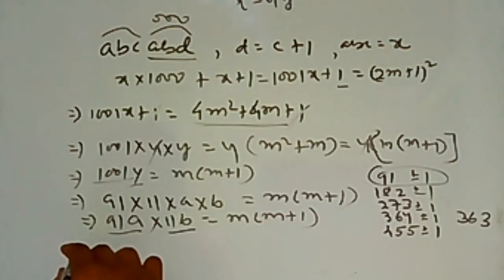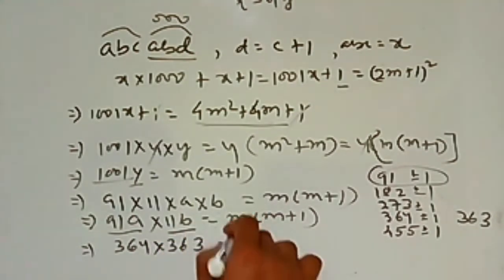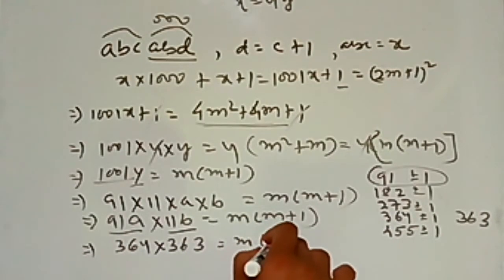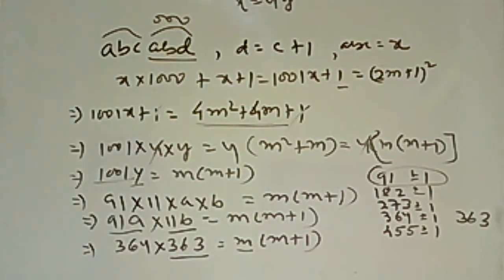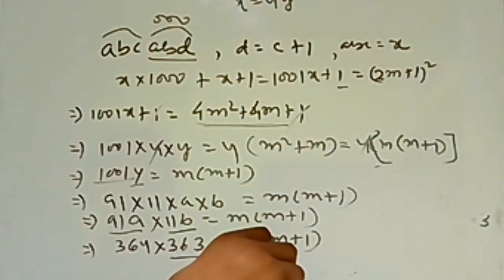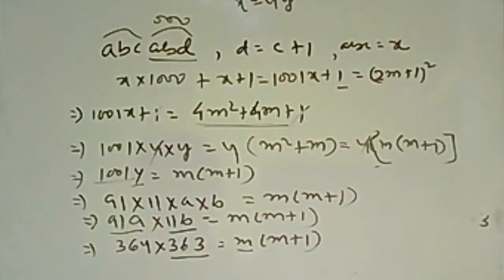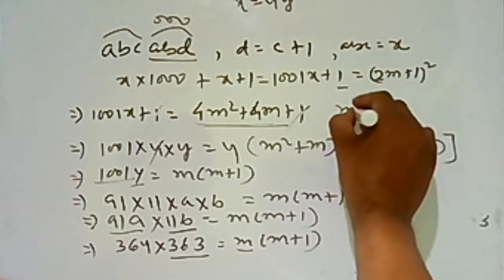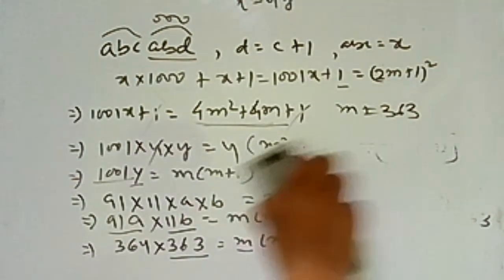Therefore, 364 × 363 = m × (m+1), so m = 363.